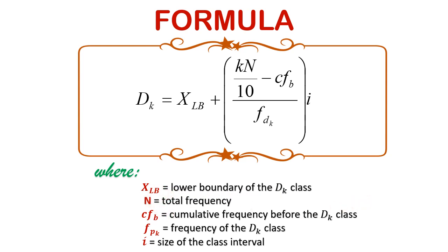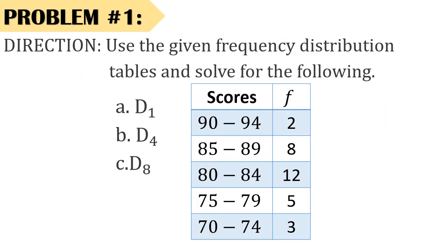Let us have our first problem so that you will be able to understand thoroughly how to get the value of our desired deciles for group data. You are supposed to find out decile 1, decile 4, and decile 8. I've already given the frequency distribution table. Take note that if I've given you raw scores, then you need to start by making your own frequency distribution table. But luckily, the data given is already in a frequency distribution table.